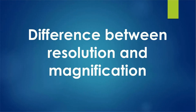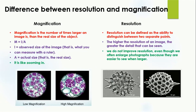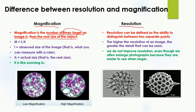Today we are going to study the difference between resolution and magnification when studying cells under the microscope. We are going to use two terms: magnification and resolution. Magnification is the number of times larger an image is than the real size of the object — how many times you have enlarged that particular image.